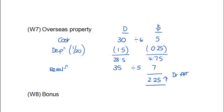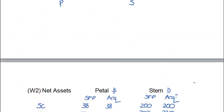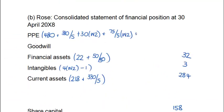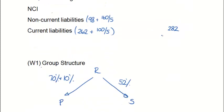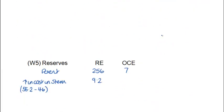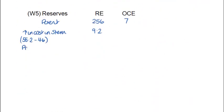The asset has increased in value by 2.25 million dollars, so I'm going to treat that as my revaluation surplus. Therefore, debit PPE by 2.25 million dollars and credit my revaluation surplus. The revaluation surplus appears in OCI as far as our statement of profit or loss is concerned, and OCI flows through into OCE. So I'm going to put that through into working number 5 and the face of my SFP. Because it's not appearing in our statement of profit or loss, that 2.25 flows through from OCI into OCE in our reserve section.